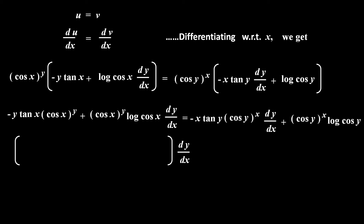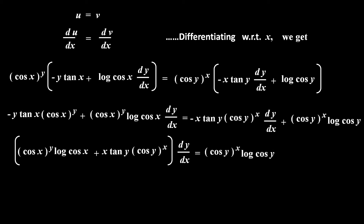By collecting terms of dy by dx together and taking dy by dx common, we get: in bracket, cos x raised to y into log of cos x, plus x tan y into cos y raised to x — term shifted from right-hand side to left-hand side, so minus becomes plus — is equal to: collecting remaining terms on the right-hand side, cos y raised to x into log of cos y, plus y into tan x into cos x raised to y — term shifted from left to right, so minus becomes plus.